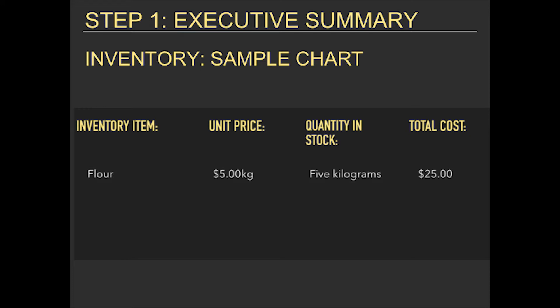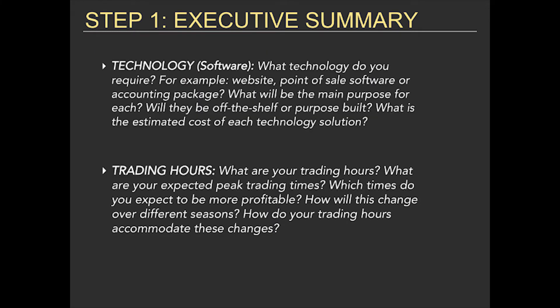Sample inventory chart includes: inventory item, unit price, quantity in stock, and total cost. Technology and software: what technology do you require — for example, a website, point-of-sale software, or accounting package? What would be the main purpose for each? Will they be off-the-shelf or purpose-built? What is the estimated cost of each technology solution?